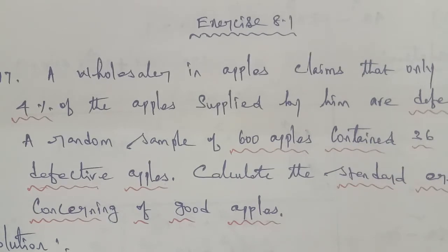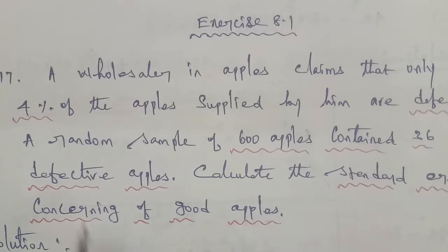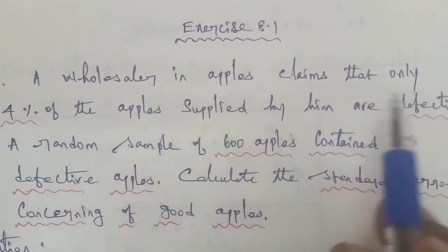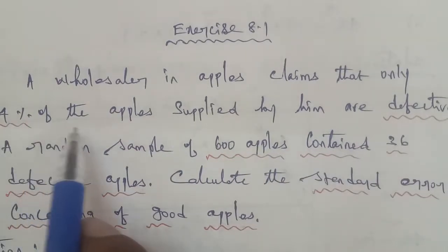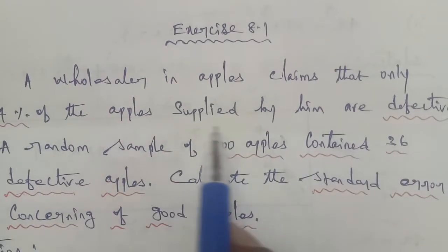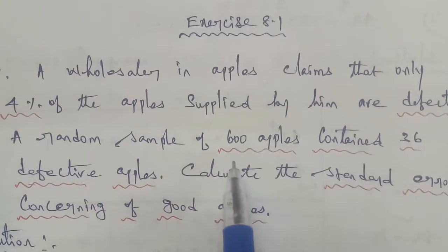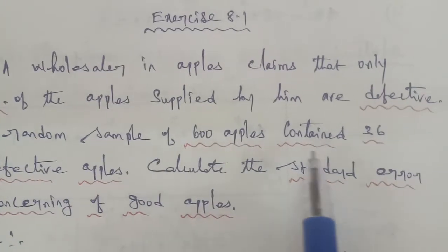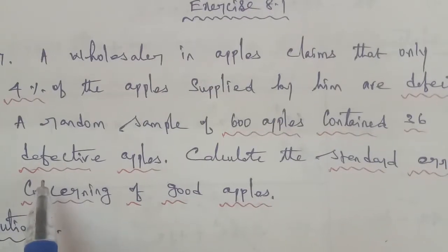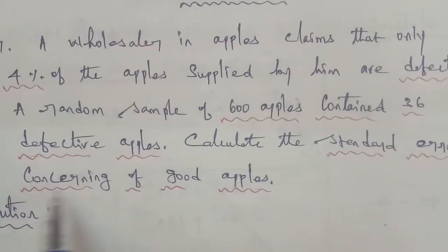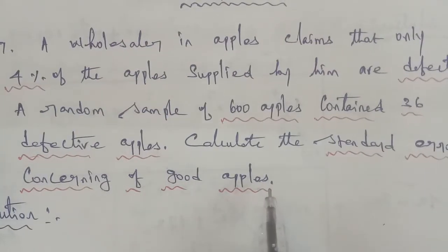Hi students, I am Gopinath. 12th Business Maths, Exercise 8.1, Question 17. A wholesaler in appeals claims that only 4% of appeals separated by him are defective. A random sample of 600 appeals contained 36 defective appeals. Calculate the standard error considering good appeals.